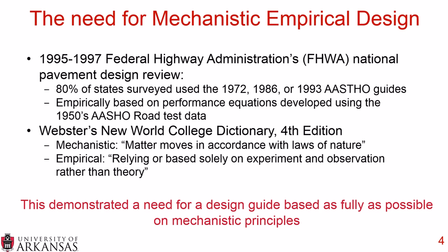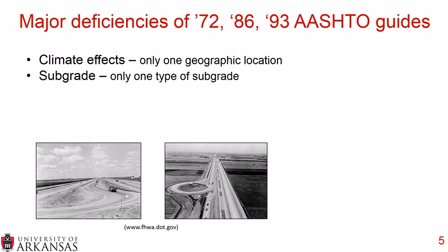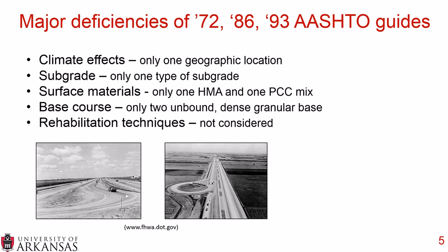Some of the major deficiencies of the 1972, 1986, and 1993 AASHTO guides include climate effects, because all data was collected at only one geographic location. Another deficiency was the subgrade, because data was only collected on one type of subgrade. There were only two surface materials — one hot mix asphalt and one Portland cement concrete mix — only two base course materials, only unbound dense granular bases, and rehabilitation techniques were not considered. While this was a very innovative study for the time, it was quite limited in scope.